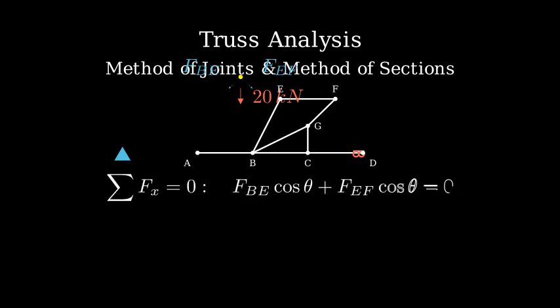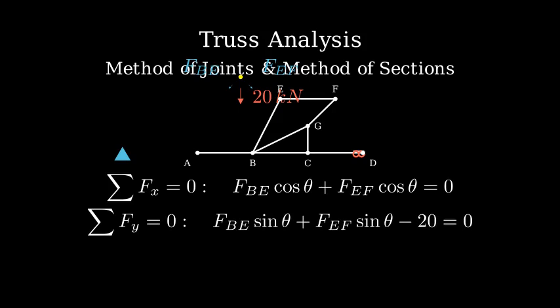In the x direction, we have FBEcosθ plus FEFcosθ equals zero. In the y direction, FBEsinθ plus FEFsinθ minus 20 equals zero.